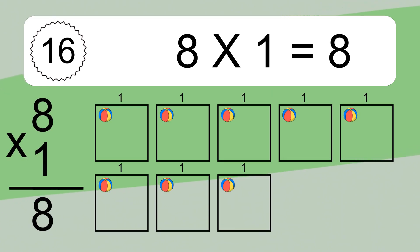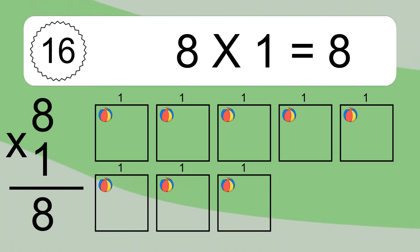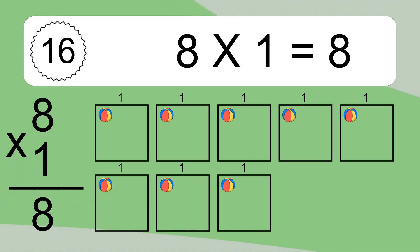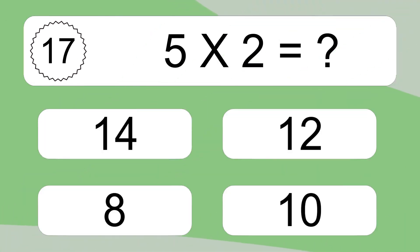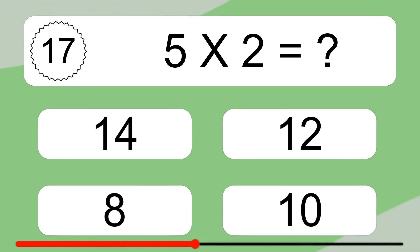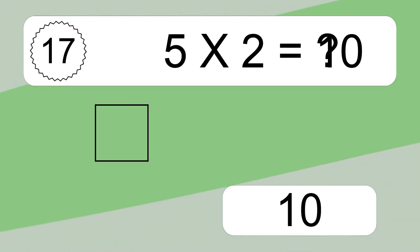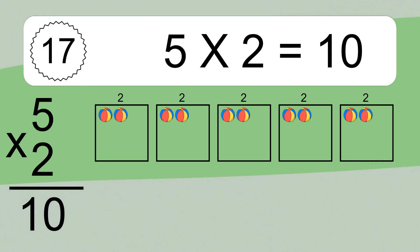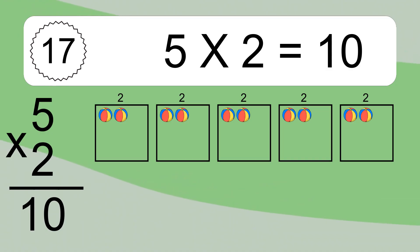8 times 1 equals 8. We have 8 boxes and each box has 1 colorful ball inside. If you count all the balls in all the boxes together, you will have 8 times 1 balls. This equals 8 balls. 5 times 2 equals what?